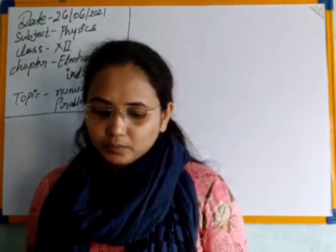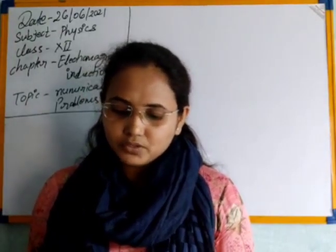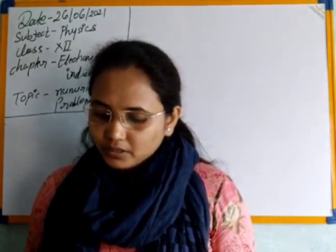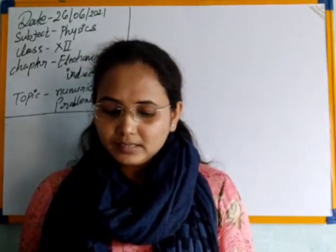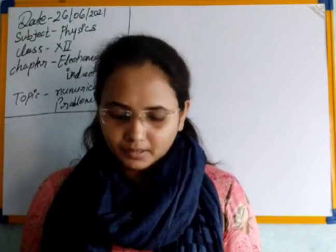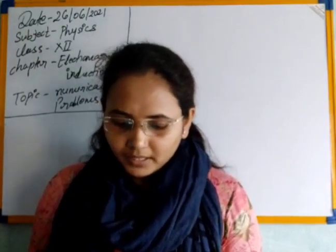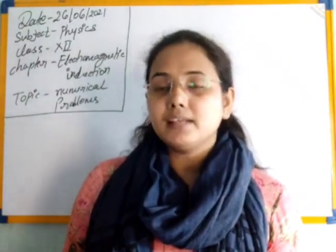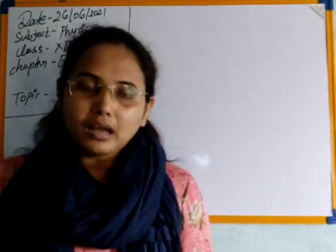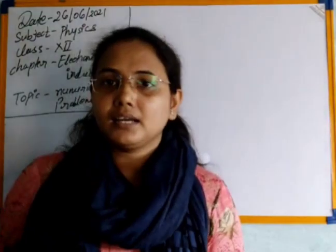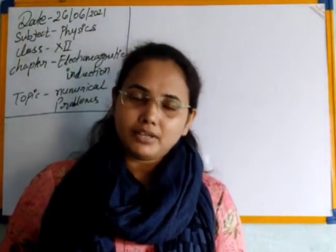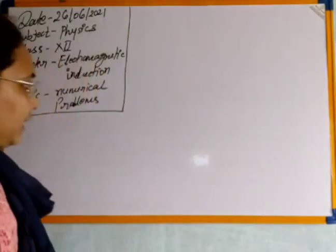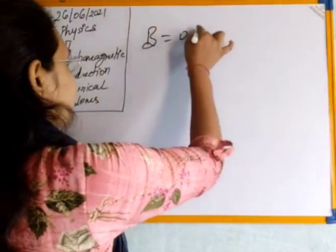The first numerical problem: a conducting circular loop is placed in a uniform transverse magnetic field of 0.02 Tesla. The radius of the loop begins to decrease at a constant speed of 1 mm per second. Find the EMF induced in the loop at the instant when the radius is 2 centimeters. Let me write the given data first. The magnetic field B = 0.02 Tesla.